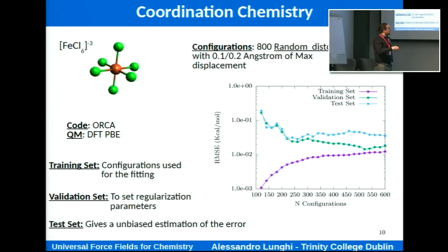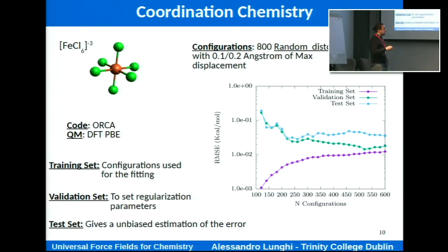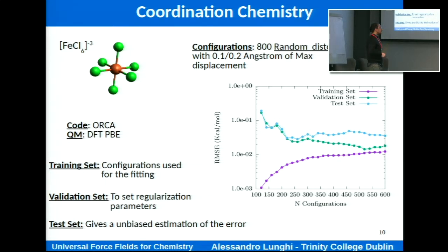Here you see the learning curve — the error in kcal/mol for the three sets as a function of the number of configurations used to train the model. At first, with only 100 configurations, there is a large difference between training and test set predictions. However, these two values converge after a few hundred configurations, confirming good predictability and generalizability. Notably, the number of configurations needed to reach a good level of accuracy is really small — just a few hundred — and the energy error is 10⁻² kcal/mol.